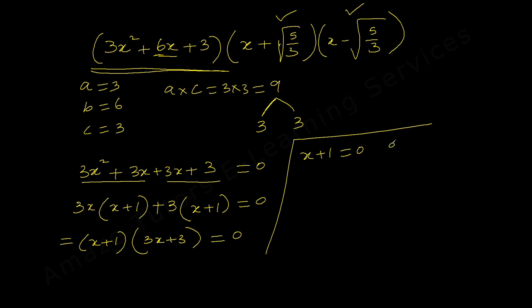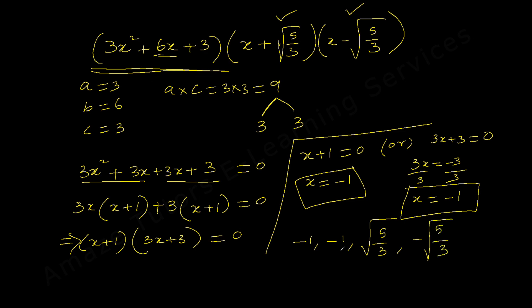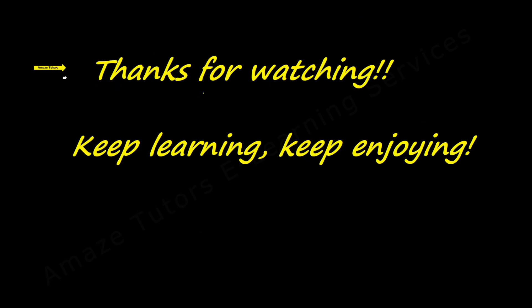To get the roots, equate to zero: (x + 1) = 0 or (3x + 3) = 0. From the first equation, x = -1. From the second, 3 is common; dividing both sides by 3 gives x = -1 again. So the other two roots are both -1. The four roots of the given polynomial are √(5/3), -√(5/3), -1, and -1. I hope you found this video helpful — kindly share with your friends, keep learning, keep enjoying!